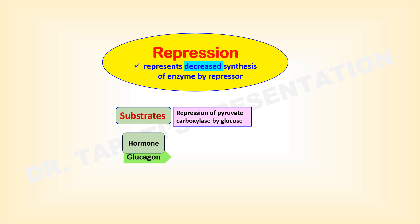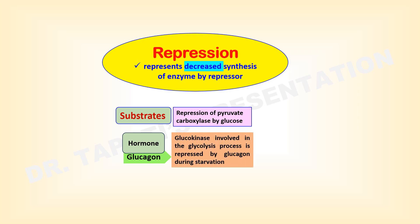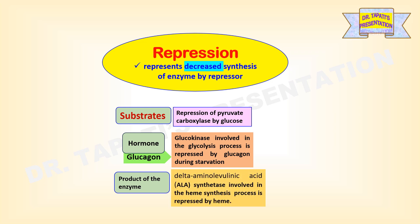A hormone can also act as a repressor. Glucokinase, involved in glycolysis, is repressed by glucagon during starvation. The product of an enzyme can also act as a repressor; for example, ALA synthetase, involved in heme synthesis, is repressed by heme, which is the product of that synthesis pathway.